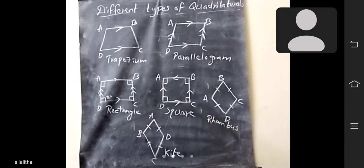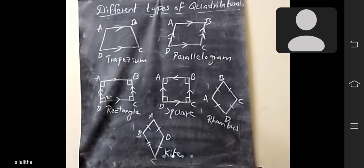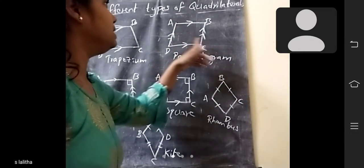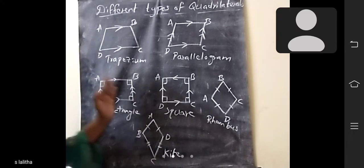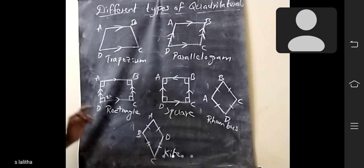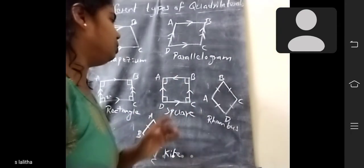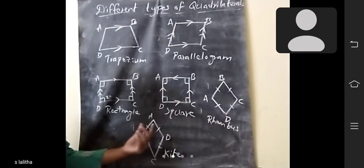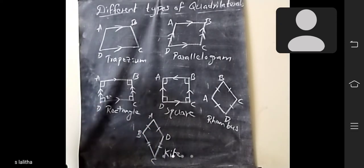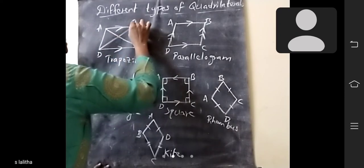Did you understand, children? First one is trapezium — only one pair of parallel lines. Next, parallelogram — two pairs of parallel lines. Next, rectangle — two pairs of parallel lines and all angles should be 90 degrees. Next, square — all sides are equal and all angles should be 90 degrees. Next, rhombus — all adjacent sides are equal. And kite — only two adjacent sides are equal. For each type of quadrilateral, if you join the opposite vertices you get two diagonals.